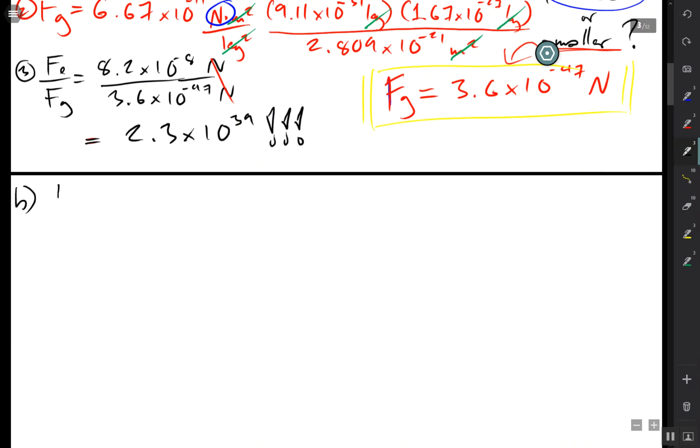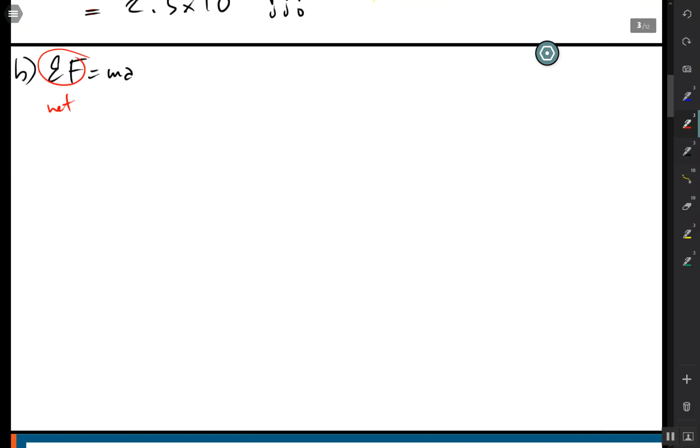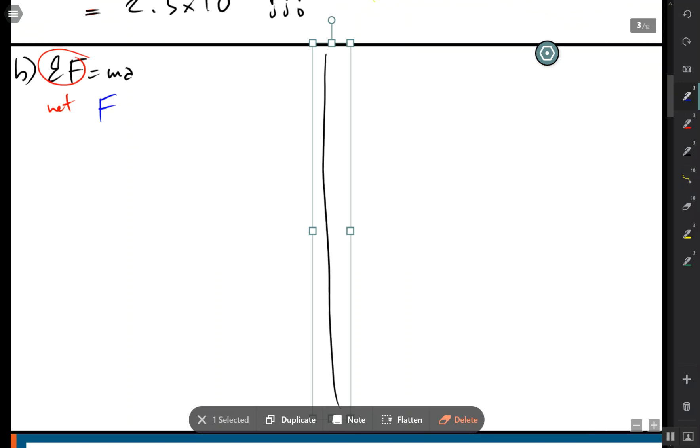Good old Newton's second law of motion. This being the net force but in this case we only have one force so I just need to split this up into two different ways. So acceleration caused by the mass of an electron.